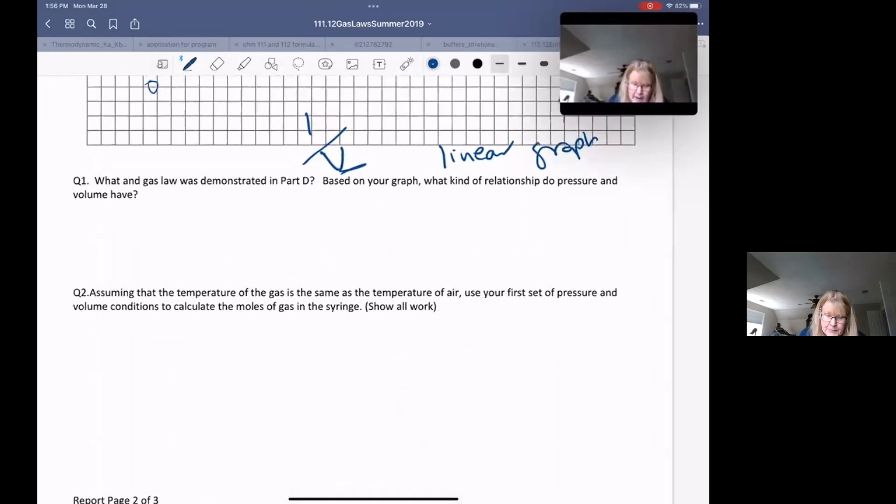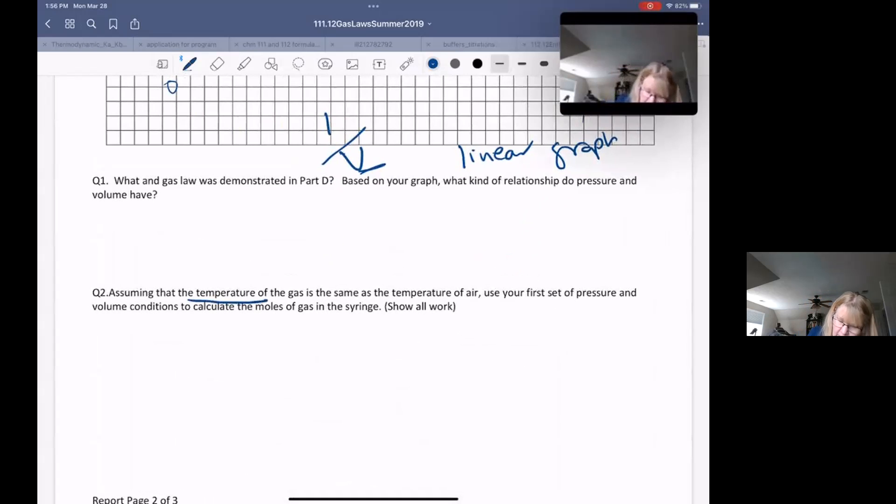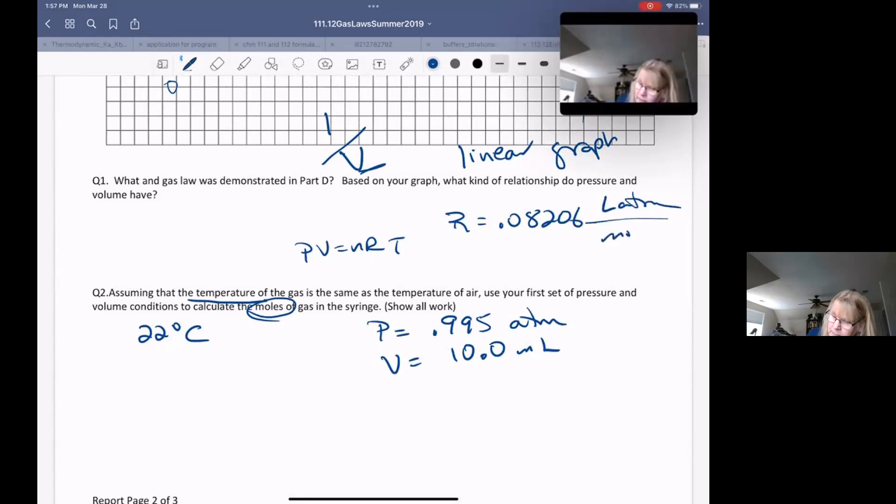All right. With this in mind, let's do a little bit of math. So assuming that the temperature of the gas was, let's say, 22 degrees Celsius, and that your pressure was, say, 0.995 ATM at a volume of 10 milliliters, we want to know how many moles of gas are in the syringe. Well, we know that PV equals nRT, where the value of R is 0.08206 liters atmospheres per mole Kelvin, telling us what our units need to be in.